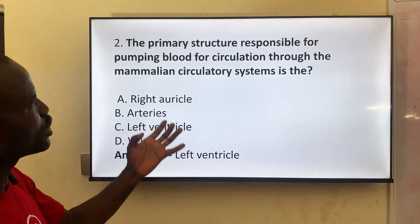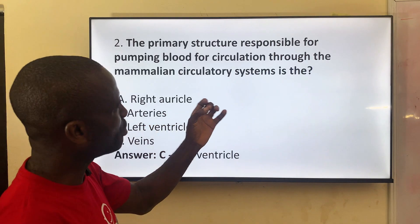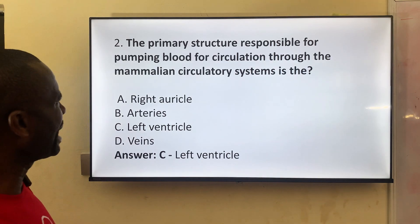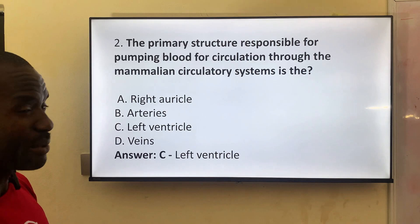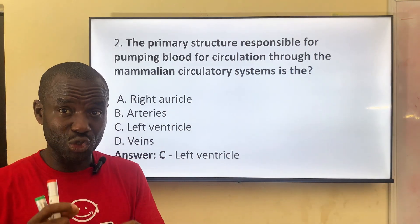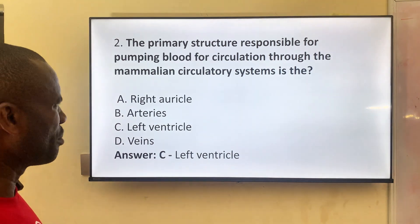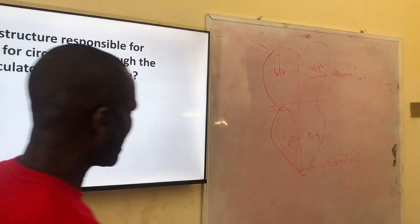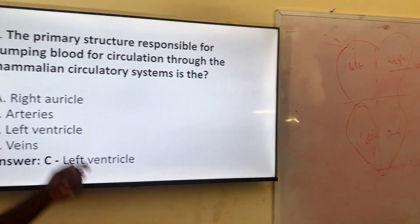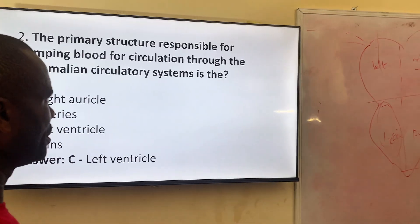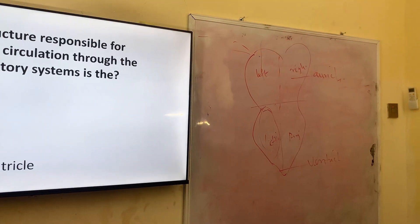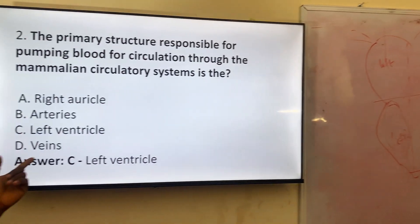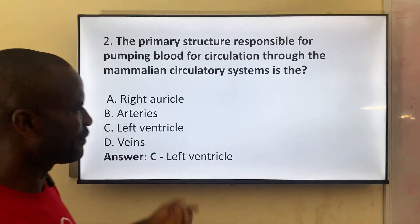Number two: the primary structure responsible for pumping of blood for circulation through the mammalian circulatory system. The heart is where pumping starts, but what is the specific area? Option A: right auricle — no. It cannot be from the upper auricle. Option B: arteries — no. Option C: the left ventricle — yes. Option D: vein — no. The answer is C, the left ventricle.